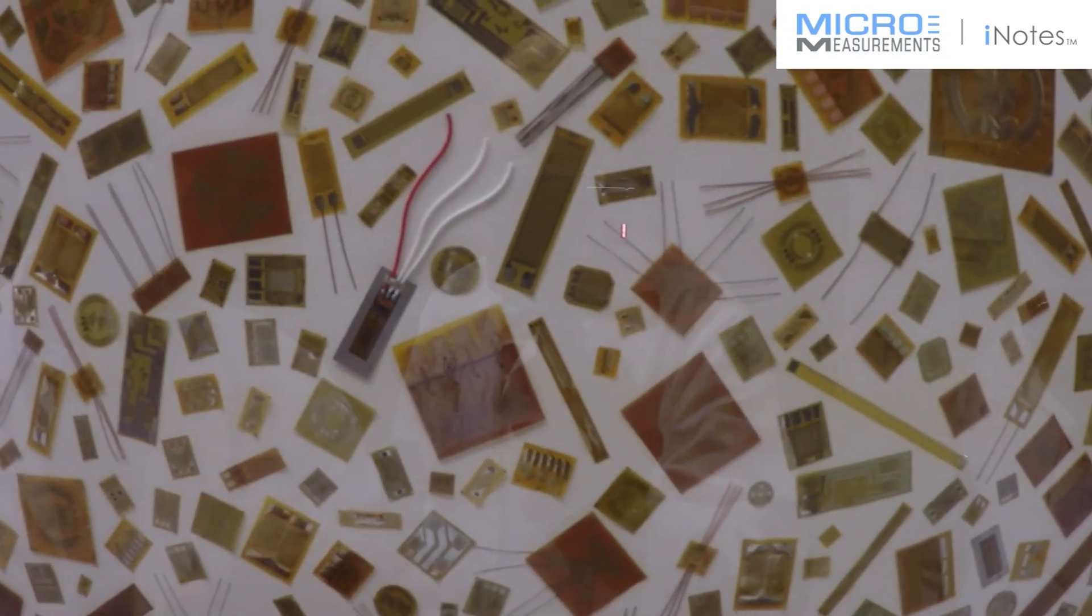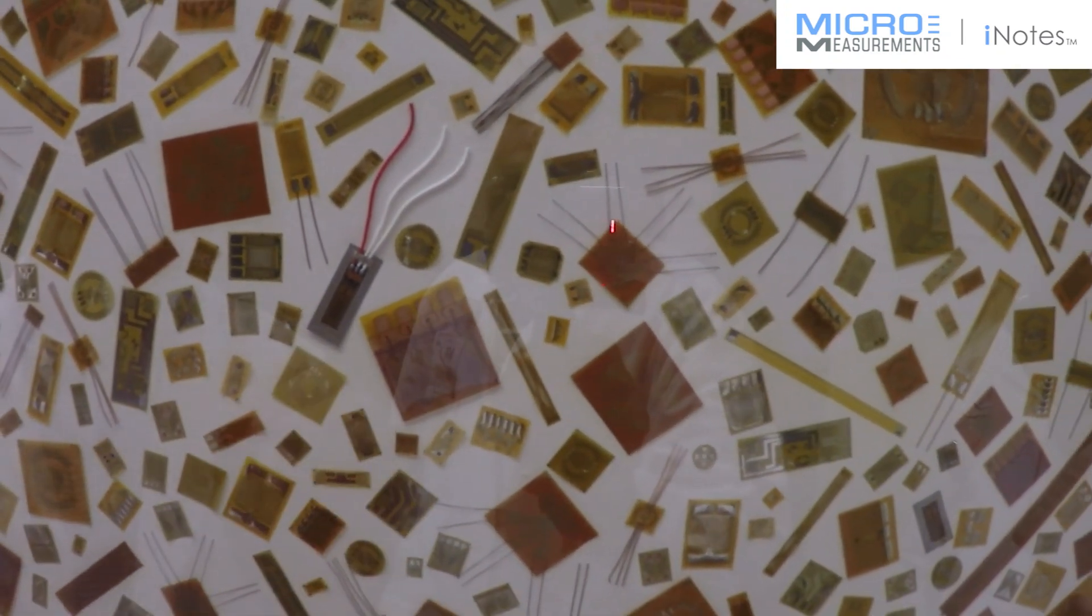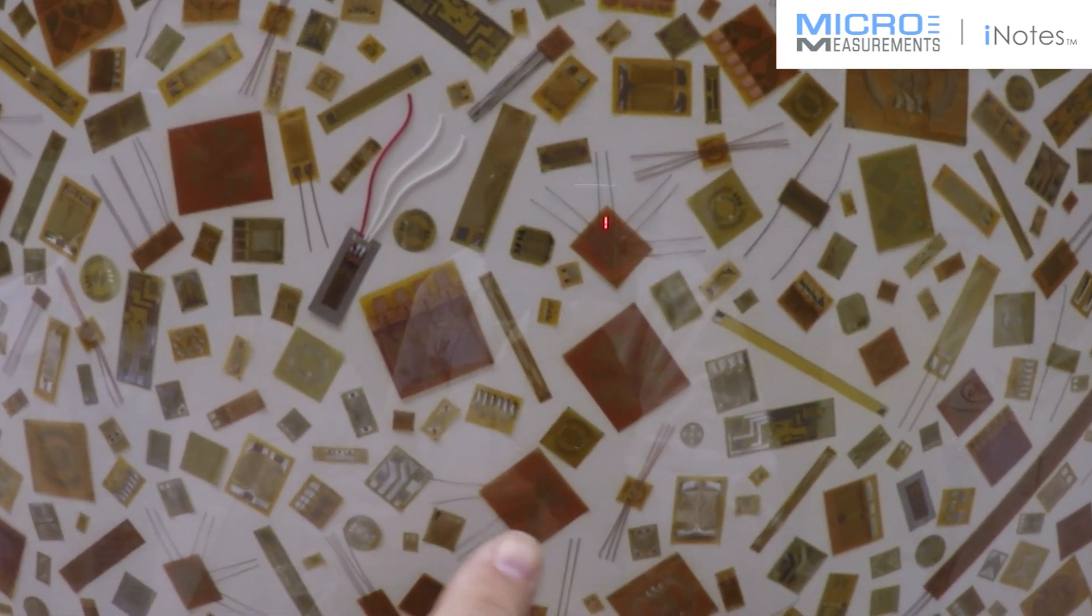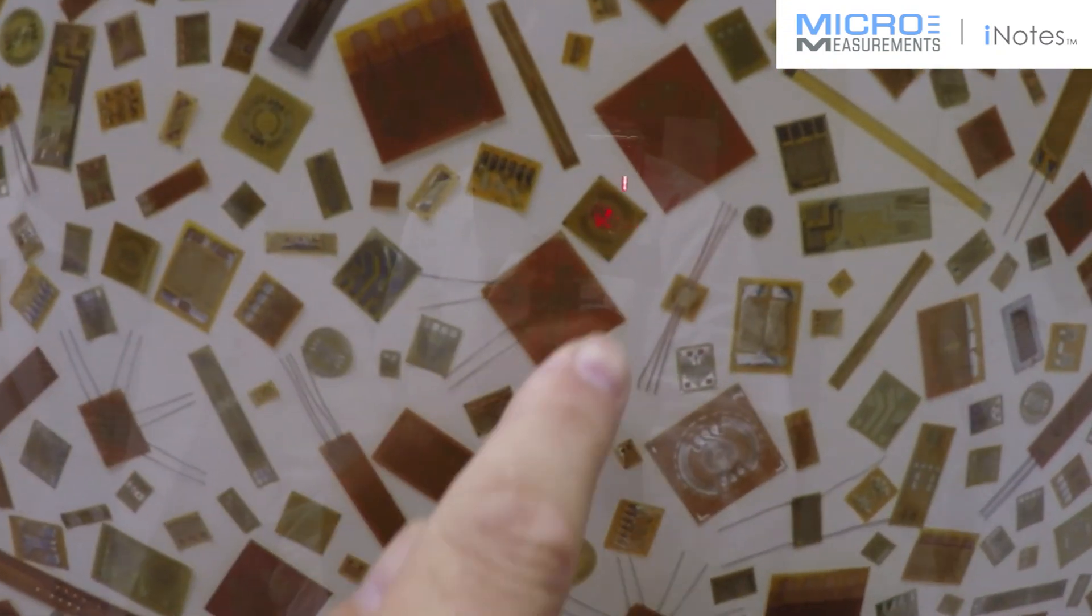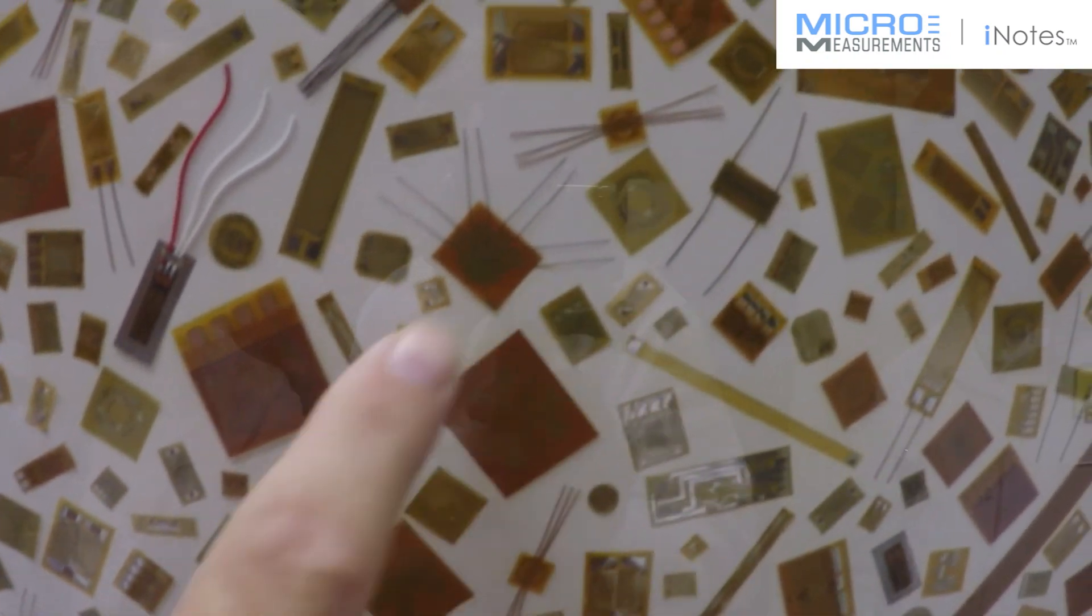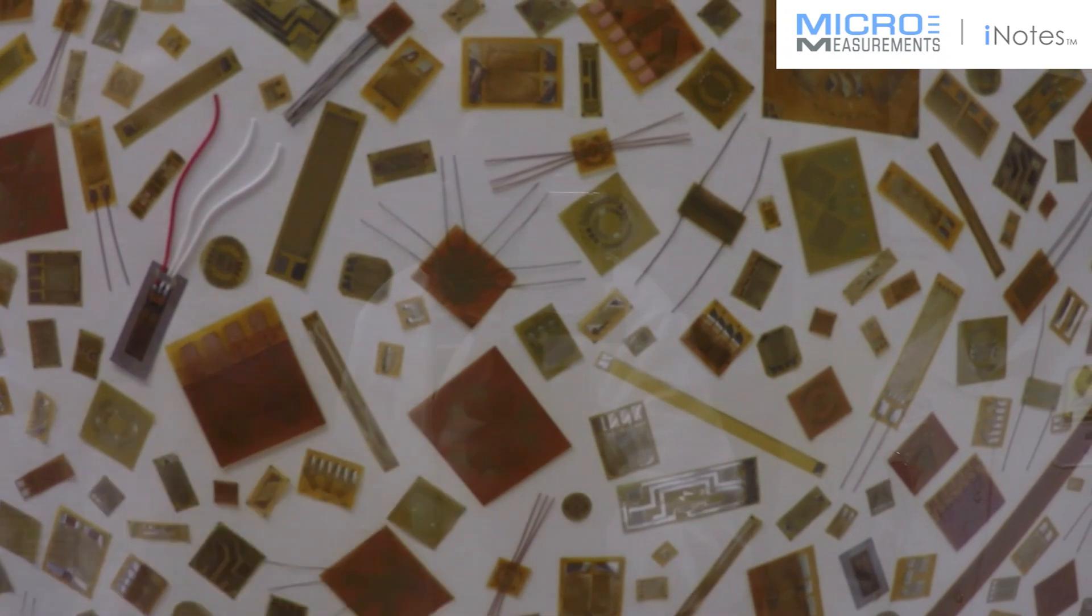In addition to that, we also have some T rosettes and rectangular style rosettes and even delta rosettes in here. This is an example of a larger size three element stacked rosette. This is an example of a three element delta style rosette.